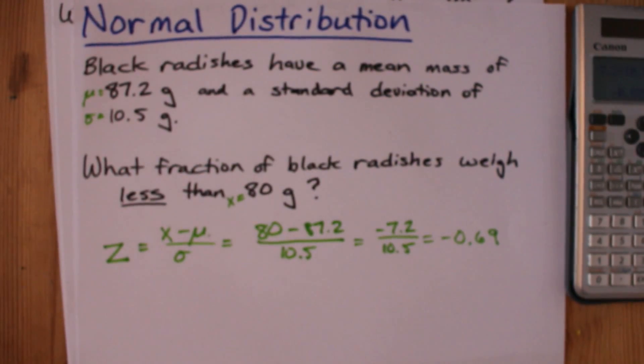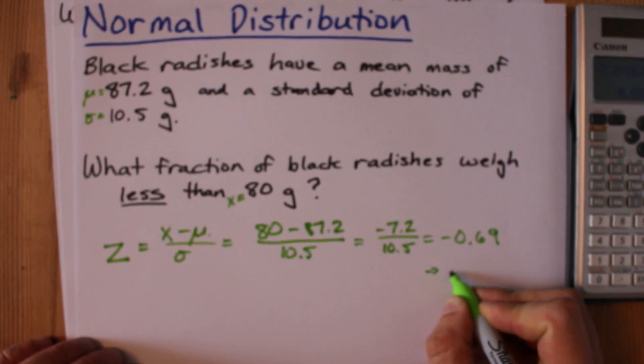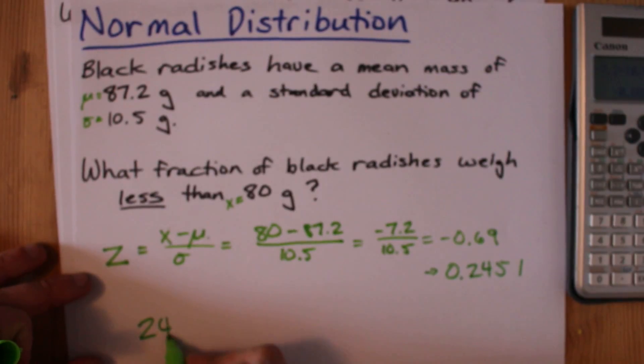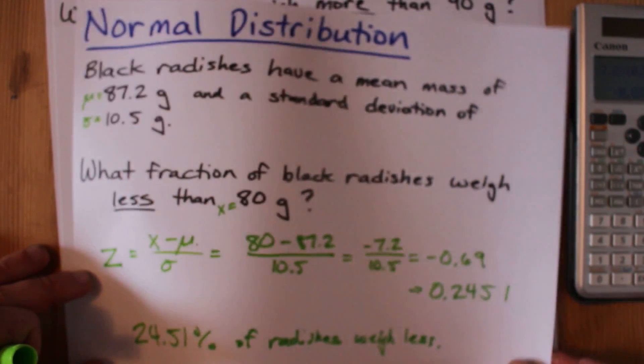This negative 0.69 corresponded to 0.2451, which means 24.51 percent of radishes weigh less. That part of the question is done.